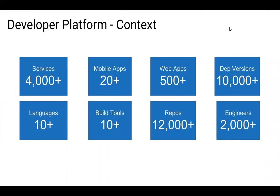Developer platform is a team focused on our engineers — essentially our customers are developers. Just to get some context of the world we operate in today: we have over thousands of services, 4,000 plus today. There are a number of mobile and web applications, both internal and external. One of the unique challenges in supporting developers is there are so many libraries and packages — a lot of open source ones and a lot of internal library developers — as well as teams that ship packages that others consume. So there are a huge number of dependency versions, and when we grew fast, that led to using different languages and different repositories. Our engineering team has grown very rapidly to thousands now.